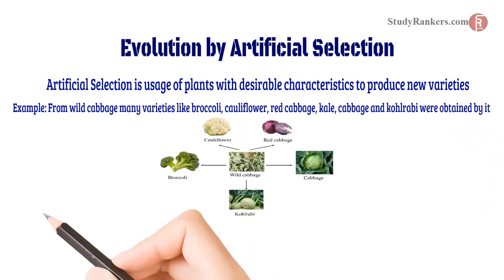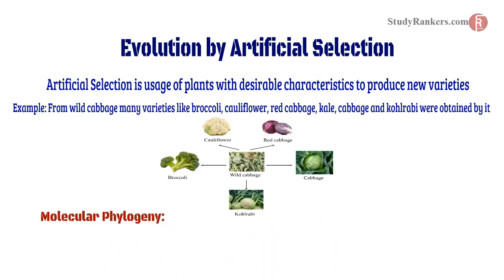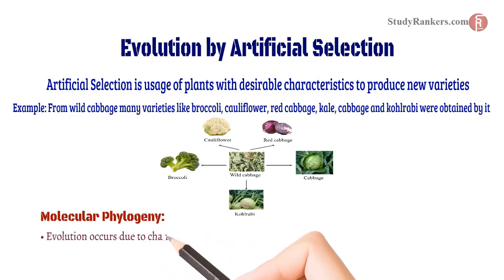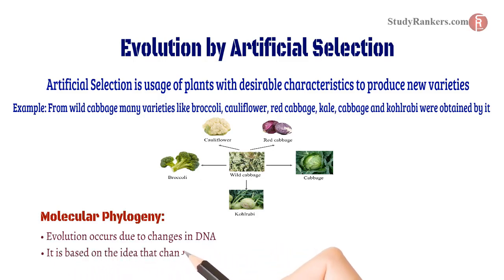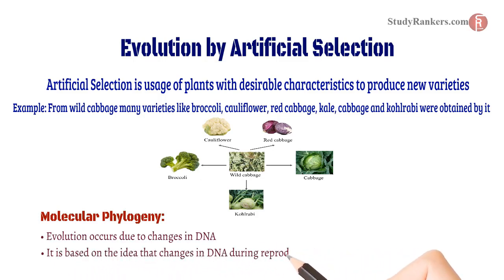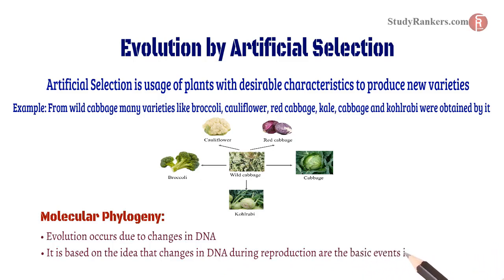Molecular phylogeny. Evolution occurs due to changes in DNA. It is based on the idea that changes in DNA during reproduction are the basic events in evolution.